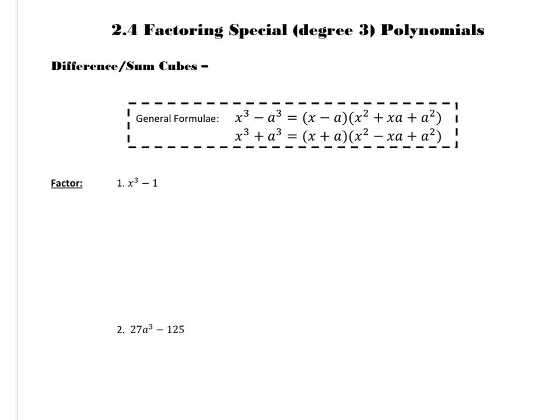So in our first example, x cubed minus 1, we're going to first have a binomial. We're always going to take the cube root of both terms, so the cube root of x cubed is x. The sign is actually going to follow, so whatever the sign is in the question, if it's a difference, then the same sign is going to be in our binomial, and then the cube root of 1 is 1.